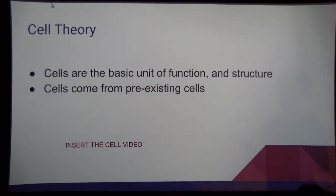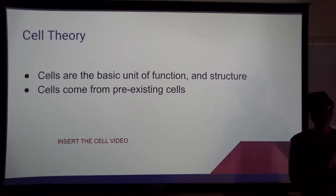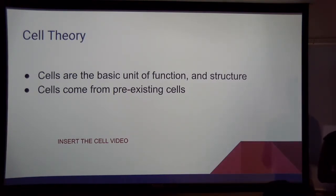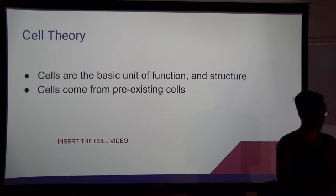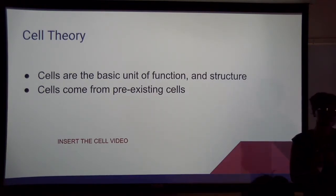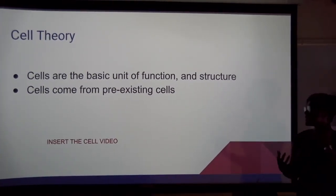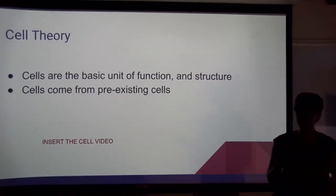Those are the main life processes that an organism will carry out in order to live. Now we're going to focus on taking a journey through the cell. The cell theory states that all living things are made up of cells — cells are the smallest part of any living thing, whether multicellular or unicellular. The cell is the basic structure, and the function of an organism is based on that cell.